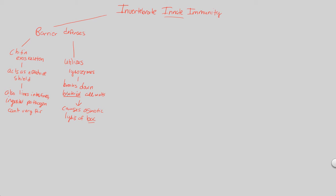For example, if a bacterium lands on the chitin exoskeleton, it will first be difficult to get through the chitin into the insect. Additionally, if it stays there long enough, a lysozyme might come by and destroy its bacterial cell wall. So those are two barrier defenses — the key idea being that they prevent entry. But what if entry does occur? Innate immunity must also quickly destroy upon entry.